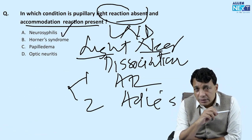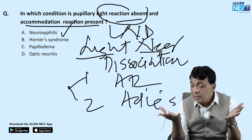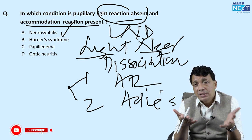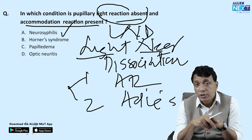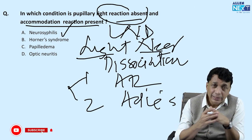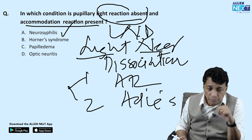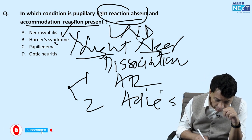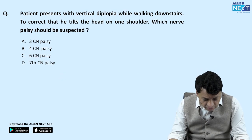The correct answer is neurosyphilis, because you get the Argyll Robertson pupil in neurosyphilis. Horner syndrome does not have LND, papilledema does not have LND, and optic neuritis does not have LND. The answer is neurosyphilis with the Argyll Robertson pupil.